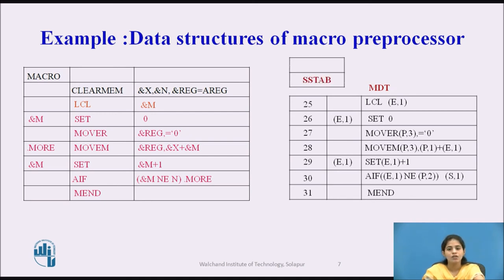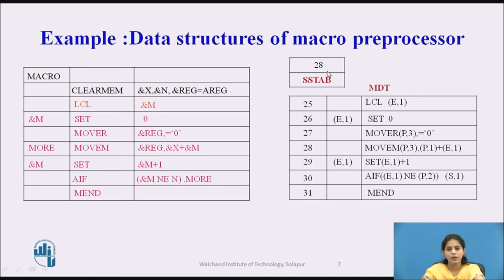Next we generate the Sequencing Symbol Table, where we specify the MDT entry number. In the macro definition, the statement containing the sequencing symbol MORE is at line number 28 in the MDT. So we specify 28 in the SS table.